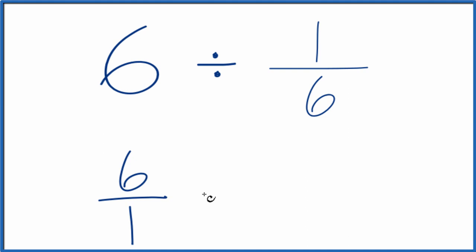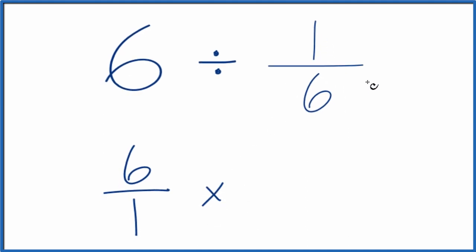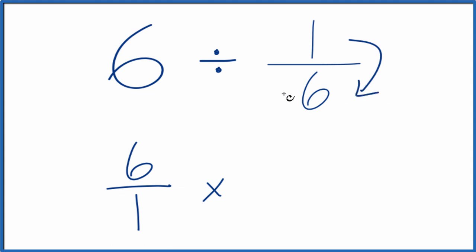Instead of division, let's multiply by the reciprocal of 1/6. To take the reciprocal, we move the numerator to the bottom and the denominator to the top. So we end up with 6 over 1. So we have 6 over 1 times 6 over 1.